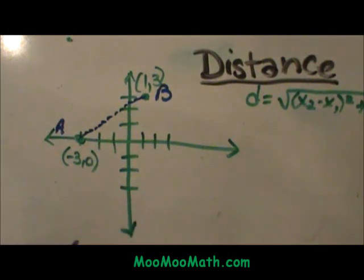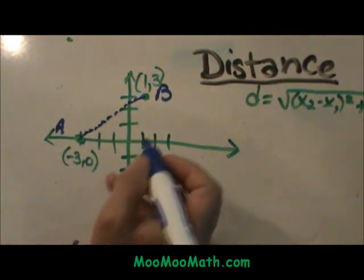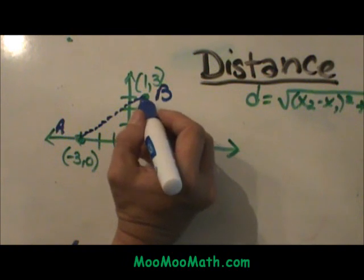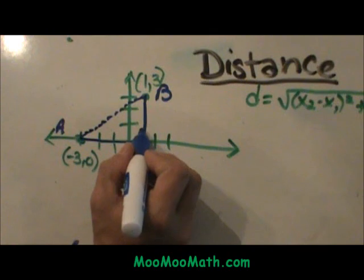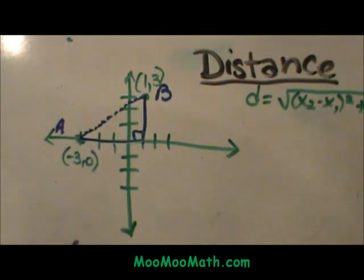So how do you figure this out? It is really pretty easy. If you know the Pythagorean theorem A squared plus B squared equals C squared it is cake. What you are going to do is draw a line straight down from B and straight over from A and you are going to make yourself a right triangle.